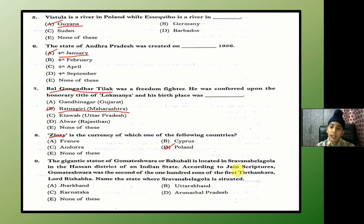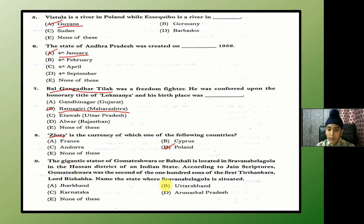According to Jain scriptures, Gomateshwara was the second of 100 sons of the first Tirthankara, Lord Rishabh. Name the state where Shravanabelagola is situated. The answer is C — Karnataka.